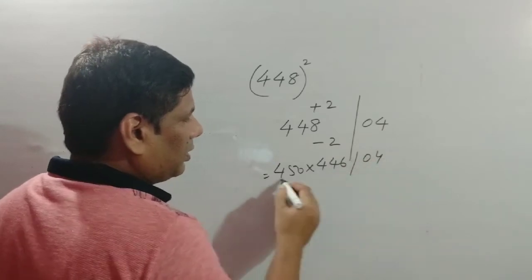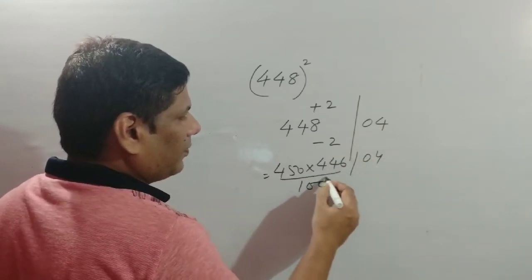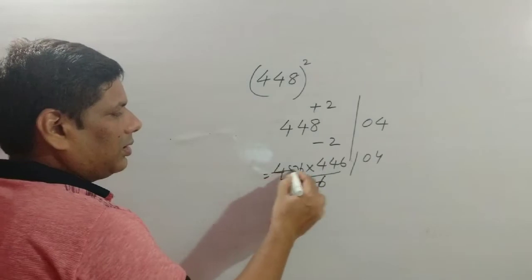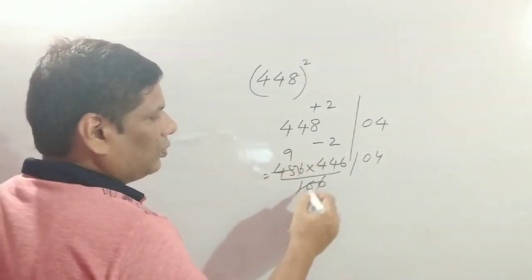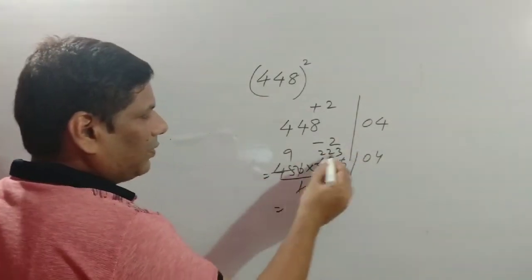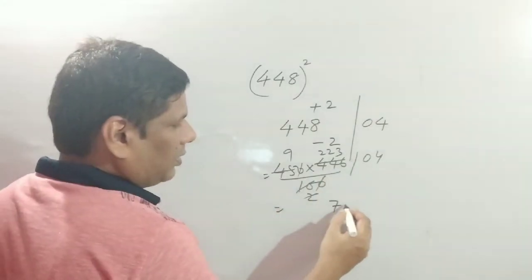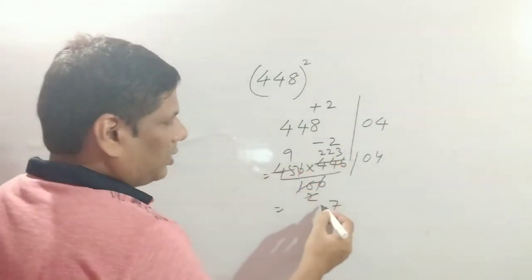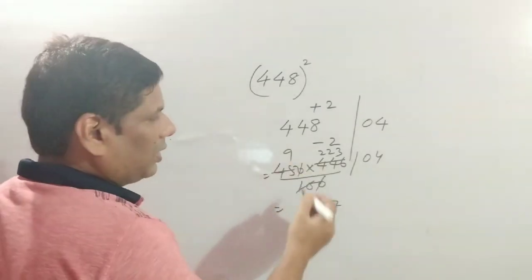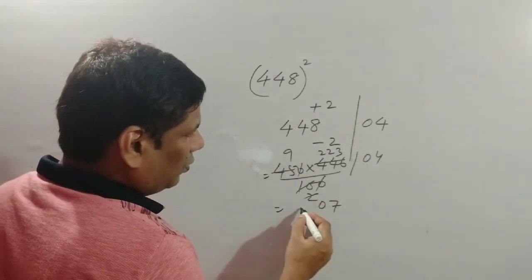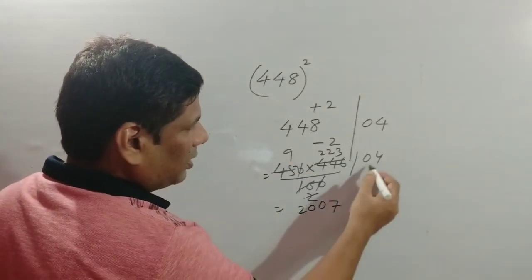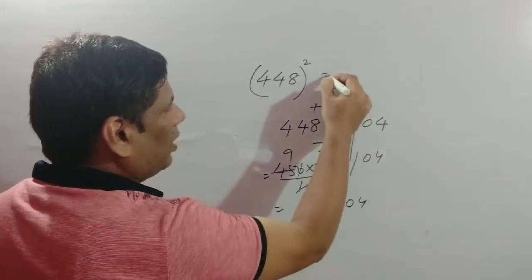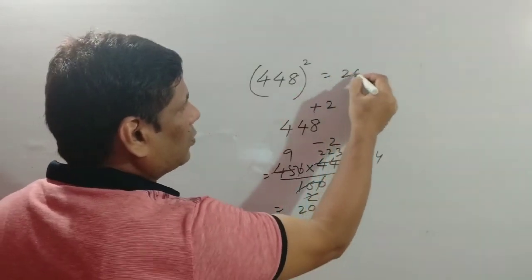448 plus 2 is 450, and the difference gives 446. We have 450 times 446 divided by 100, then add 04. Cancel zeros, multiply 9 times 2 is 18, carry 2, 9 times 4 is 36 plus 2 is 38, giving 20,070.